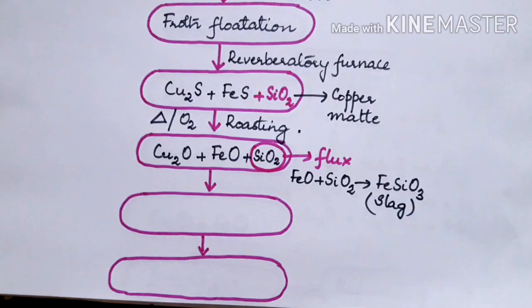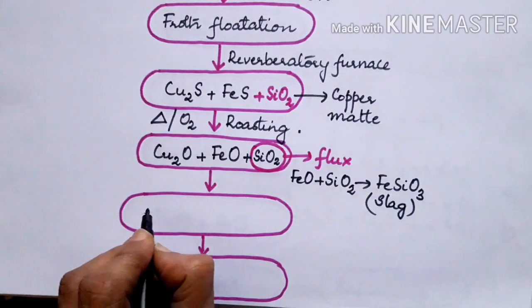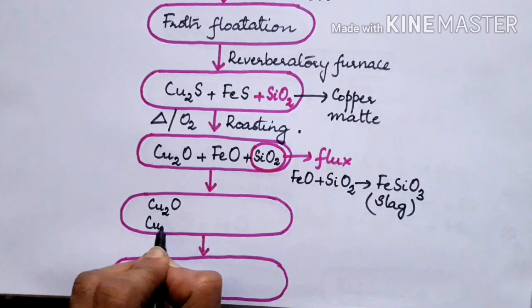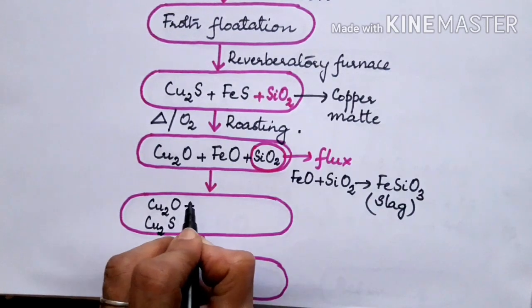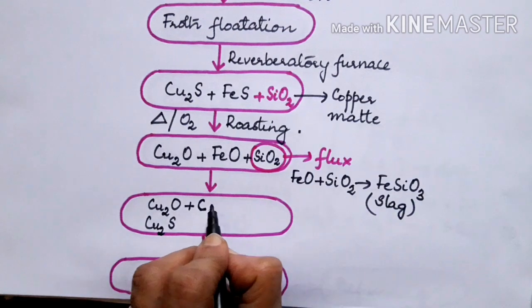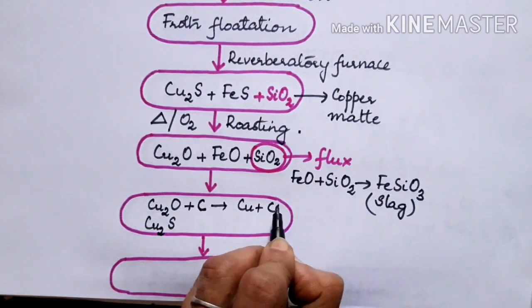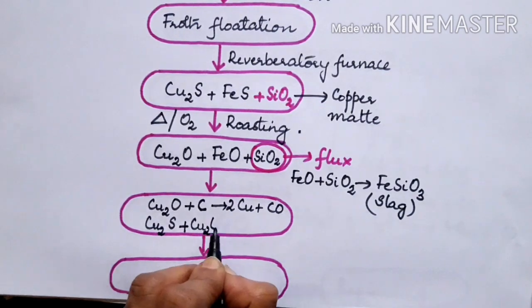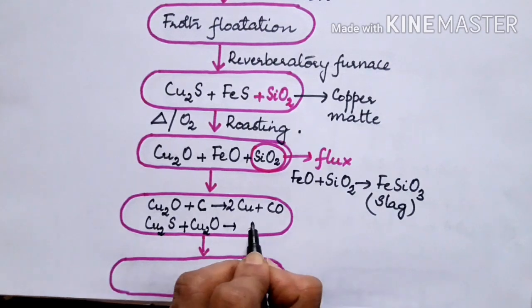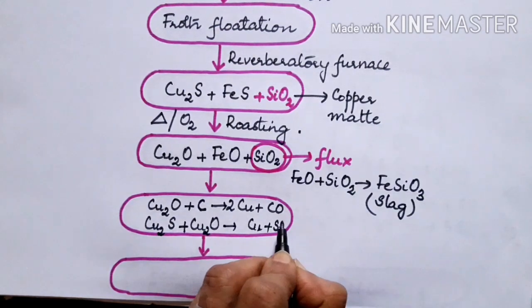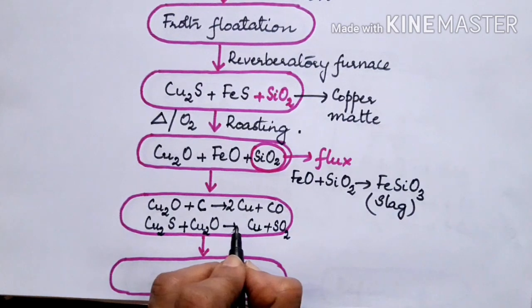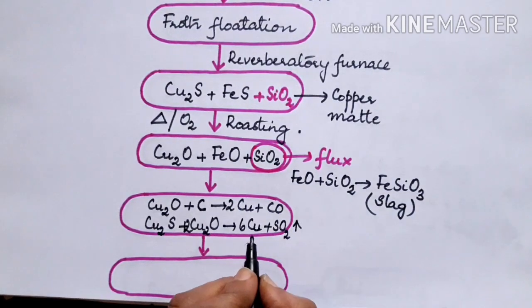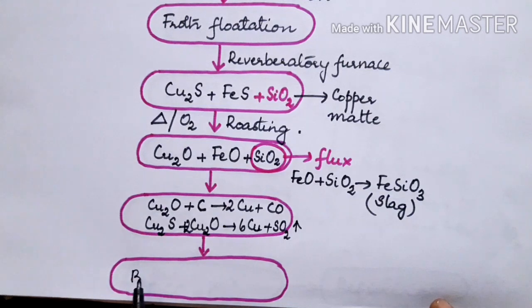After the removal of the slag, the compounds that remain there are Cu2O and some amount of Cu2S. You find that this is treated with the reducing agent coke to form Cu and carbon monoxide. Further, you find that some amount of Cu2O also reacts with copper sulfide to form Cu and sulfur dioxide. The product finally formed here will be 6Cu plus sulfur dioxide and the end product is known as blistered copper.